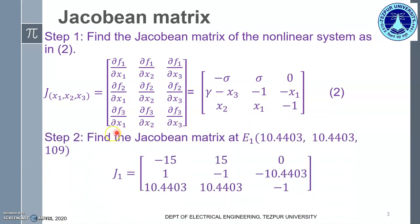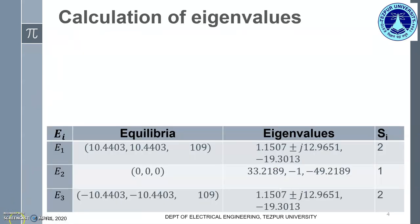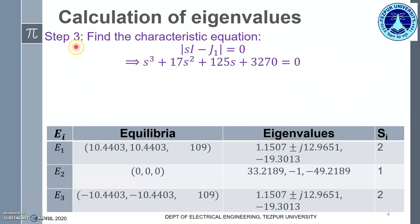Step number 2 is to find the Jacobian matrix at E1, the equilibrium point. We are going to replace x1, x2, and x3 as 10.4403, 10.4403, and 109 as given in this particular matrix. We have also replaced sigma and gamma by their corresponding values. Step number 3 is to find out the characteristic equation by finding the determinant of sI minus J1 and equating it to 0. Here, I is the identity matrix, and J1 is the Jacobian matrix corresponding to equilibrium point 1. Since it is a three-dimensional system having three state variables x1, x2, and x3, the I matrix will be a 3×3 matrix.